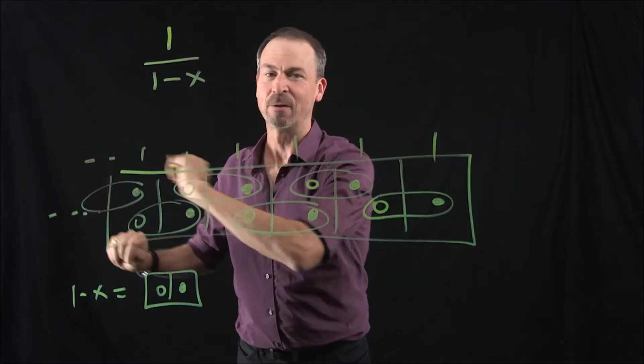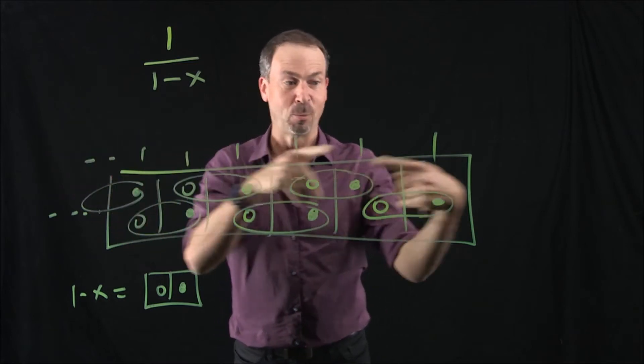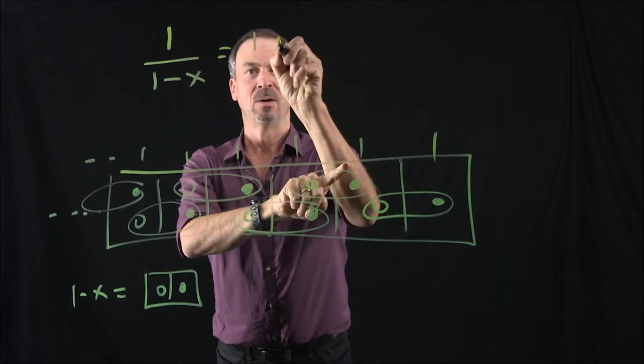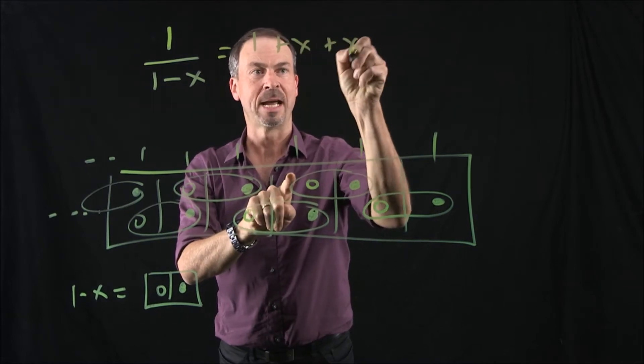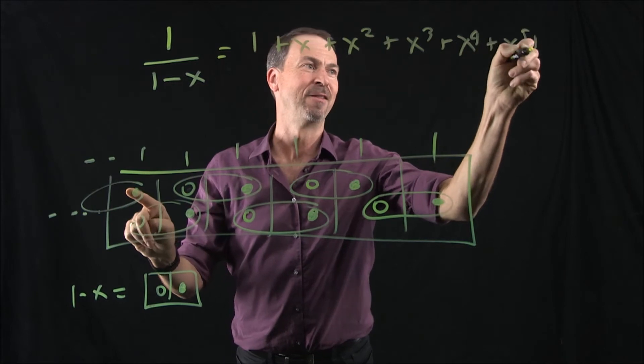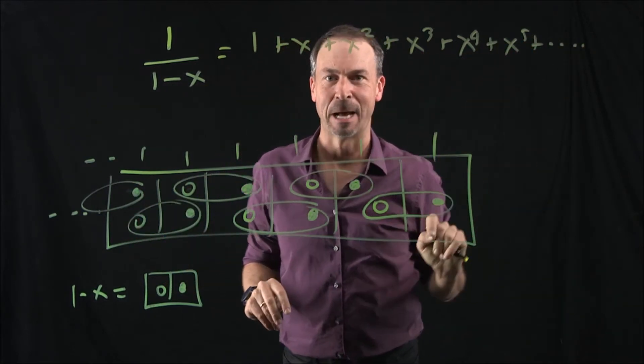Alright, so the answer is 1, 1, 1, 1, 1 going on forever. So how do I interpret that answer? Well, it's hard to start from the left this time. Maybe I'll actually start from the right. That is 1, 1 and 1x and 1x squared and 1x cubed and 1x to the 4th and 1x to the 5th forever. I've actually got an infinite sum.